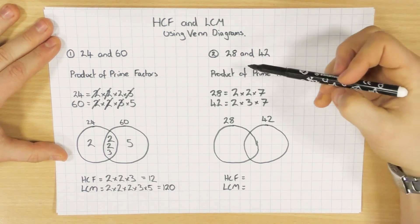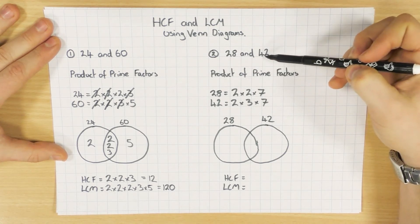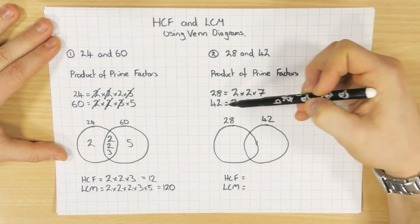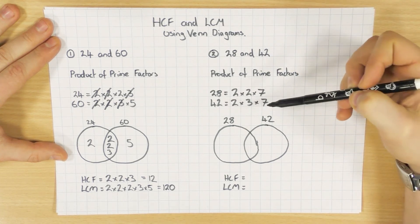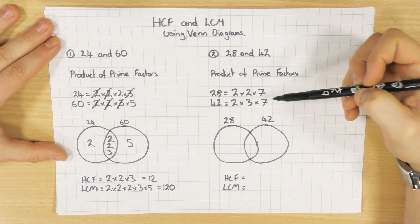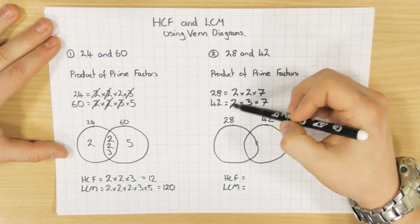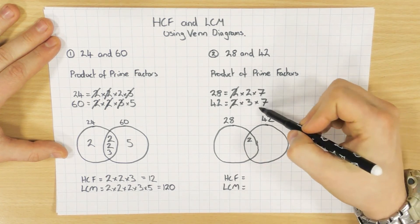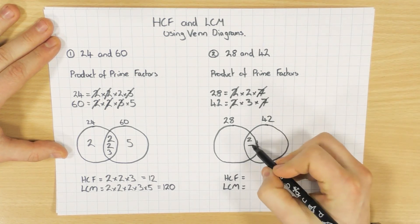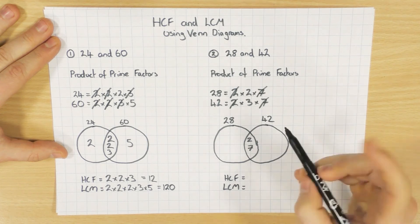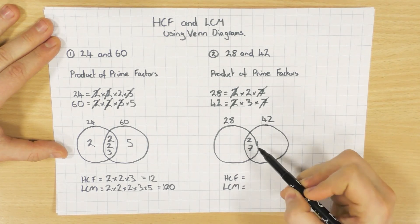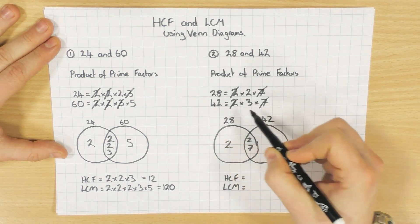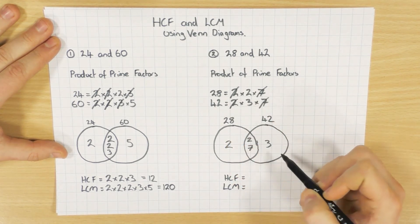Going to our next example: 28 and 42. I want to know the highest common factor and lowest common multiple. So you break them down into a product of their prime factors. Looking at which ones are the same — 2 is the same, so I'll put 2 in the middle, and 7 is the same, so I put 7 in the middle. Notice I only put one 2 and one 7 in. What's left for 28 is a 2, and what's left for 42 is a 3.